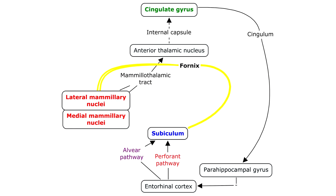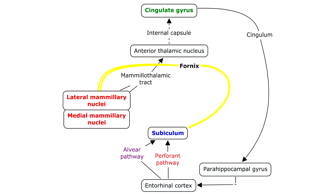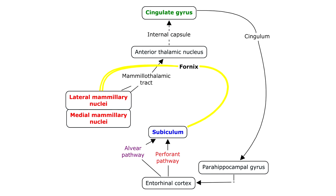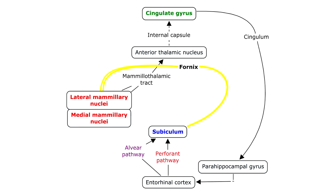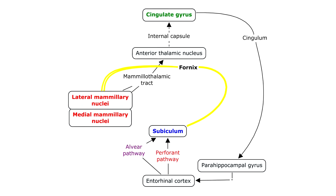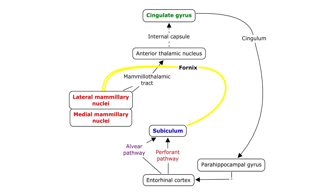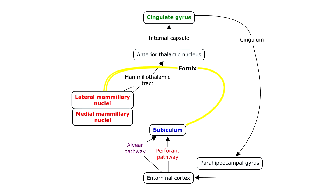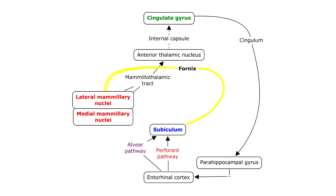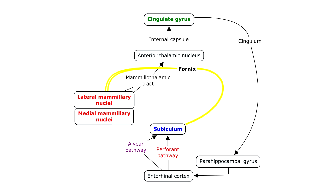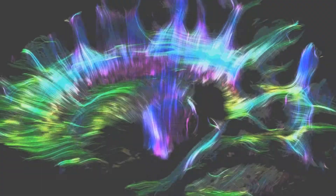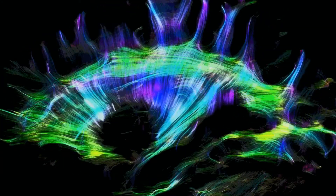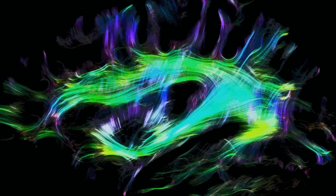The neuronal pathway goes from the subiculum, to the fornix, to the mammillary bodies, to the mammillothalamic tract, to the anterior thalamic nucleus, to the cingulum, to the entorhinal cortex, and back to the subiculum in the hippocampal formation.